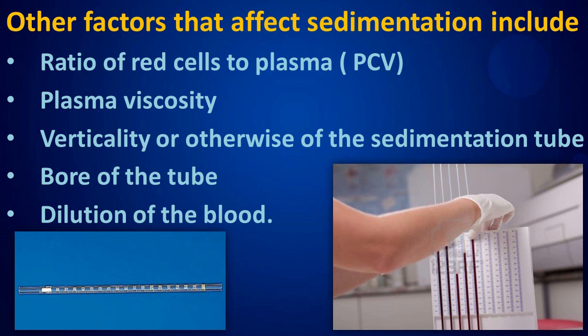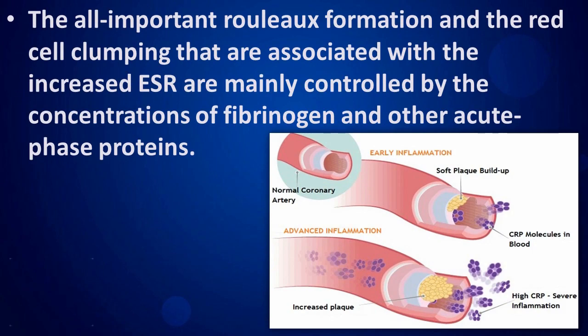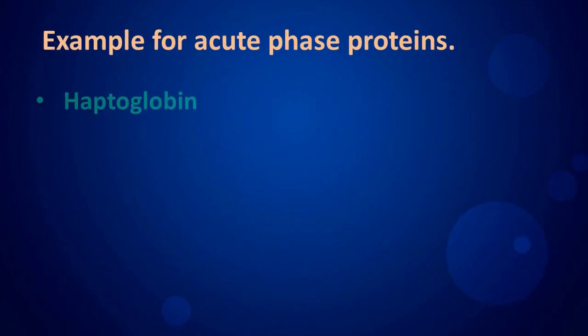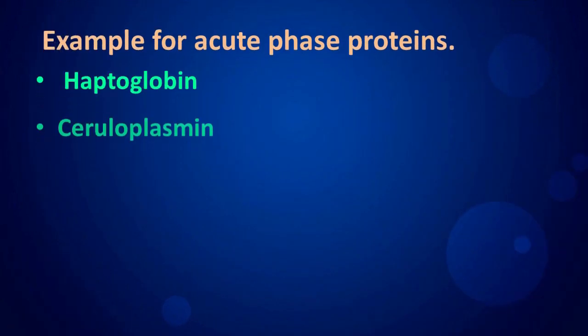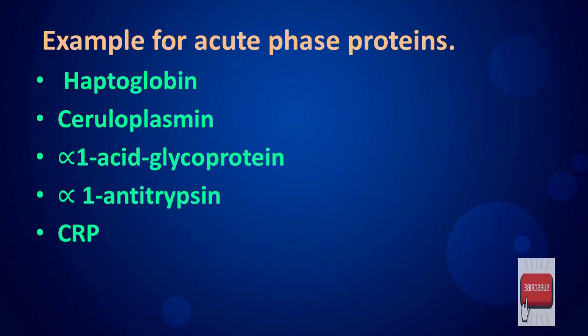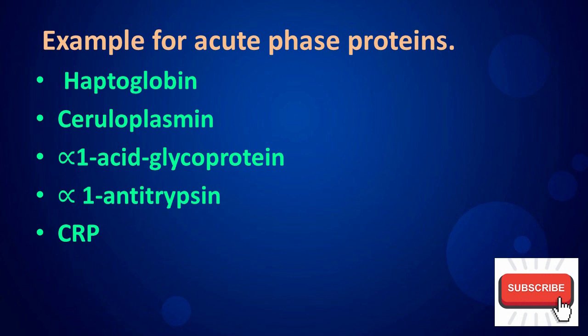The all-important rouleaux formation and red cell clumping associated with increased ESR are mainly controlled by the concentrations of fibrinogen and other acute phase proteins. Examples of acute phase proteins include haptoglobin, ceruloplasmin, alpha-1 acid glycoprotein, alpha-1 antitrypsin, and CRP.